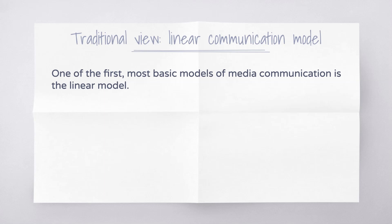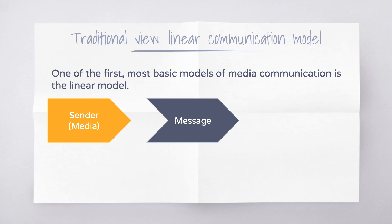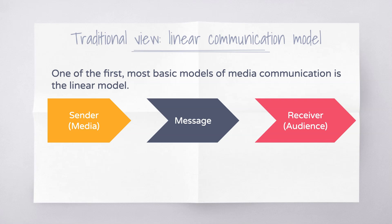One of the first and most basic models of media communication is what we call a linear model. Linear just means flows in one direct line. In its basic form we have the sender of any communication — in this case it's the media — the message that they are passing on, and the receiver, which in the media context is the audience. This communication model applies outside of the media too; the sender, message, and receiver could be something as simple as a letter or a text message.